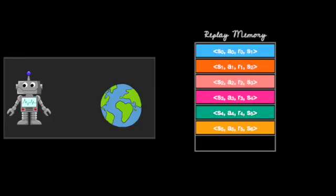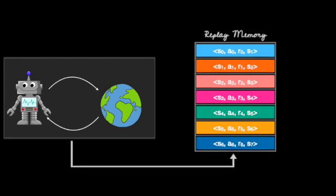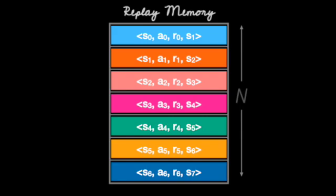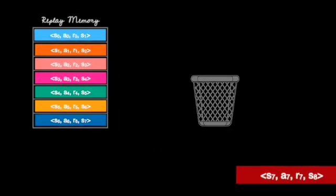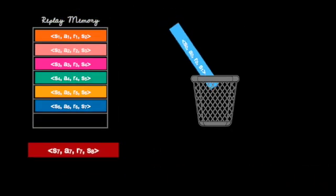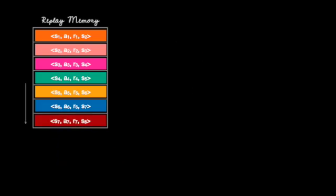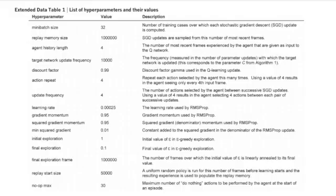We already established that the replay memory is used to store each of the interactions that the agent has with the environment. The replay memory has a fixed size of N. As the memory fills up, older experiences are removed to make space for the newer ones. Keep in mind that this N is usually quite large — for example, in the paper to solve the Atari environment, the authors used a replay memory of 1 million records.